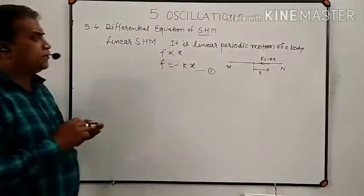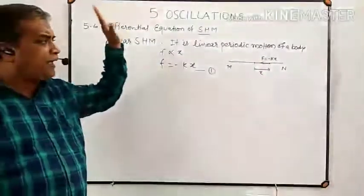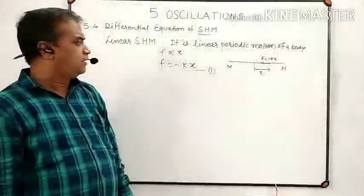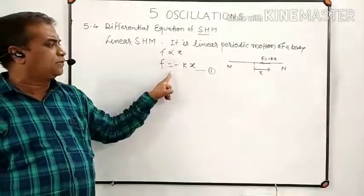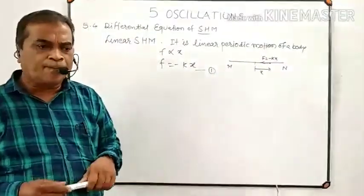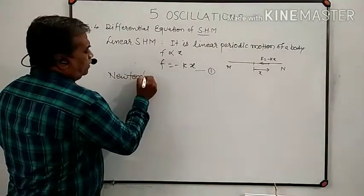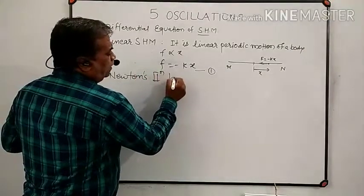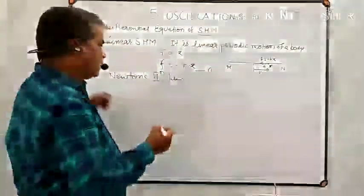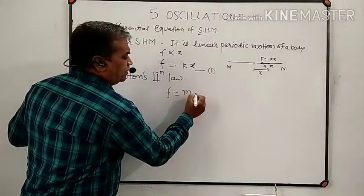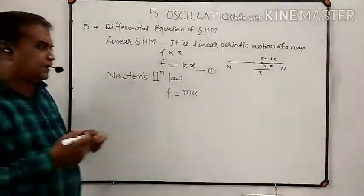So here we have one of the equations used to represent linear simple harmonic motion. If any body is performing linear SHM, then the force acting on it is given by F equals minus k times x. Now, according to Newton's second law of motion, if m is the mass of a body and a is its acceleration, then the force acting on the body is equal to mass times acceleration.